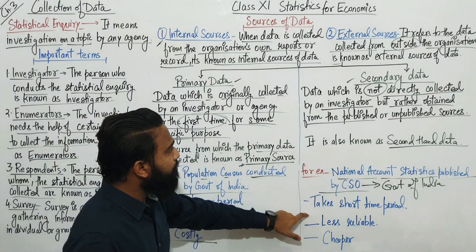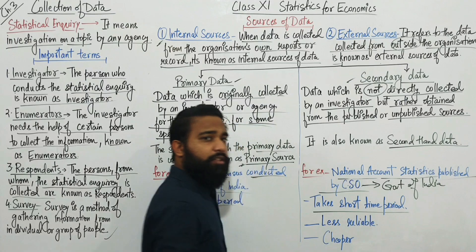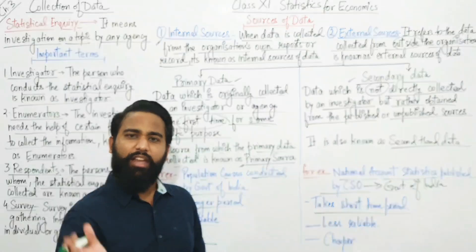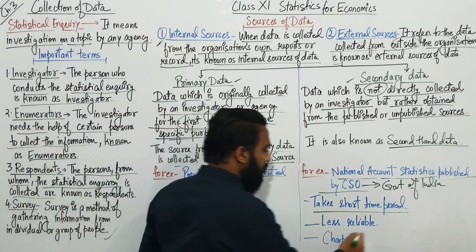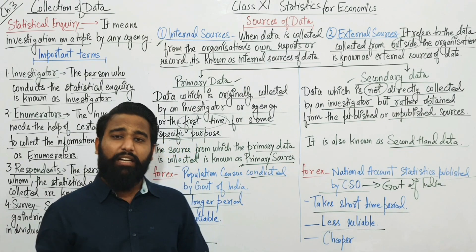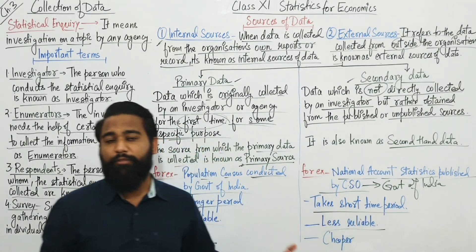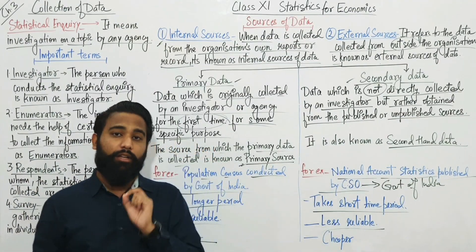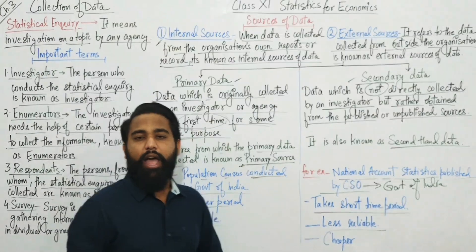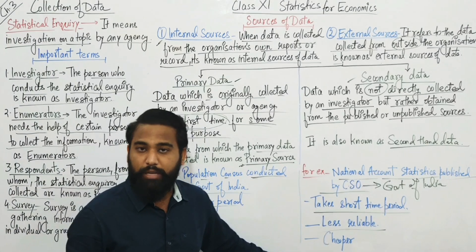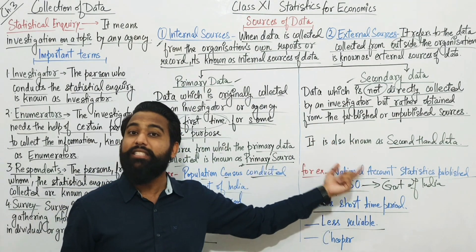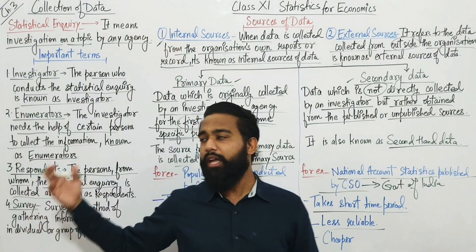Secondary data takes a shorter time period because you just have to go to the concerned person who already has the inquiry done and obtain the entire data. It is less reliable because it is not done by you — it is done by someone else, and it requires trust to be reliable. Compared to primary data, it is also cheaper because you don't have to travel to many places, as that work has already been done by someone else.